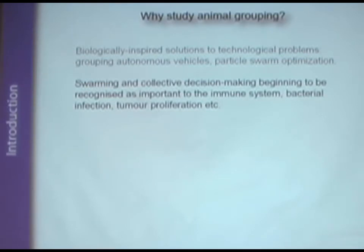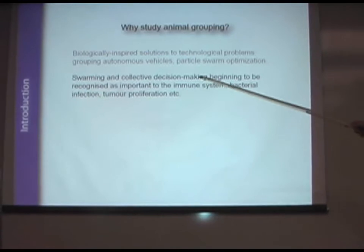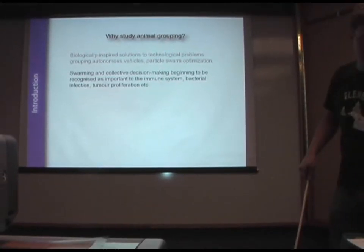But we're also beginning to realize that the types of swarming behaviors that we see in the natural world and that we're beginning to model and understand are actually exhibited in a wide range of systems from the immune system, bacterial infection, and even very recently in tumor proliferation.